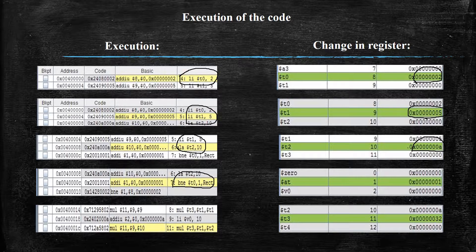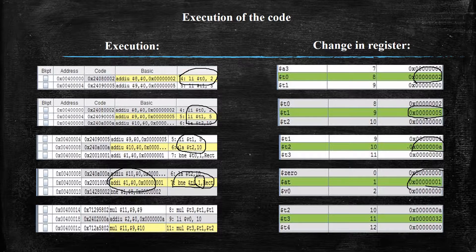When the BNE statement is to be executed, MARS simulator does not execute BNE directly. It uses an add immediate statement and then performs the BNE. So the number 1, which is to be compared with register T0, is added with 0 and stored in register AT. Then the value of register AT and the value in register T0 are compared. When they are not equal, it goes to the rect loop where the multiplication process is performed and the result is stored in register T3.